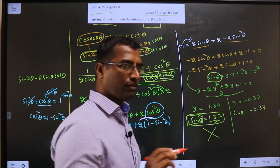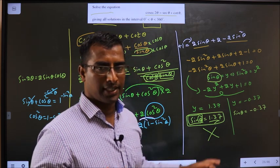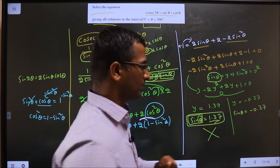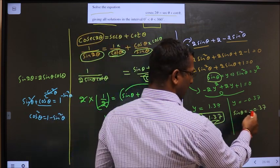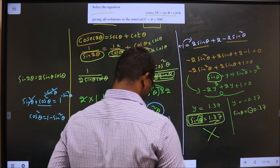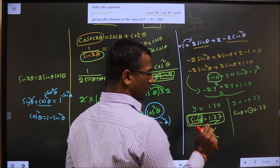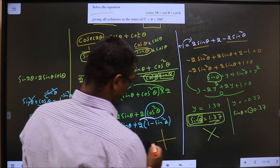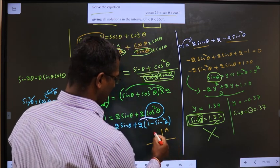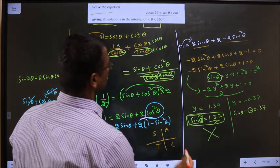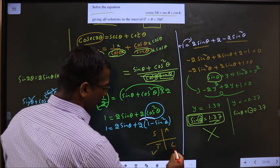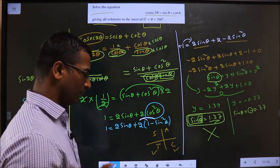You will not get any value for θ because here sin θ has exceeded 1. Now here I got sin θ to be negative. I should see where all is sin negative. All silver tea cups: sin θ is negative in 3rd and 4th.